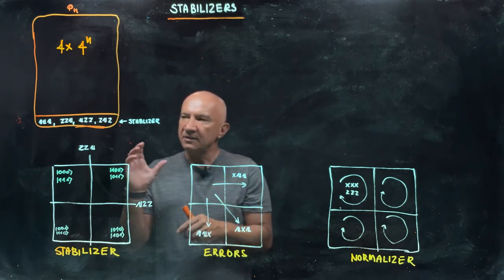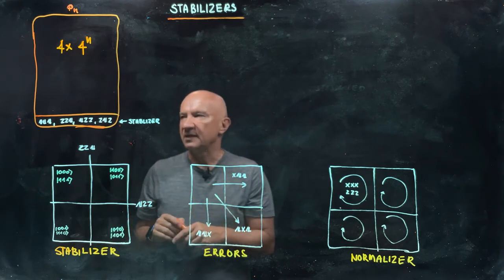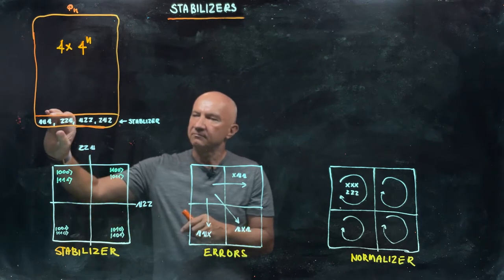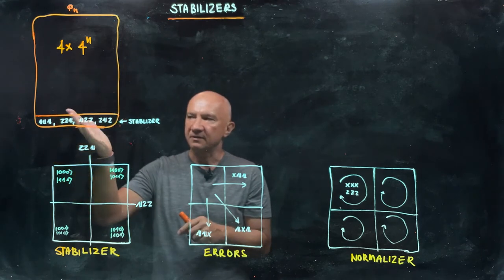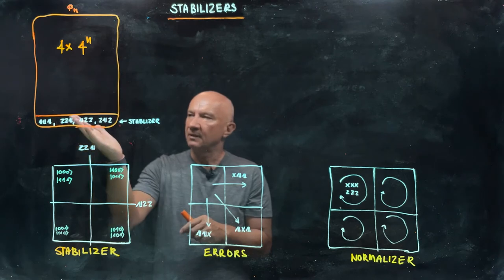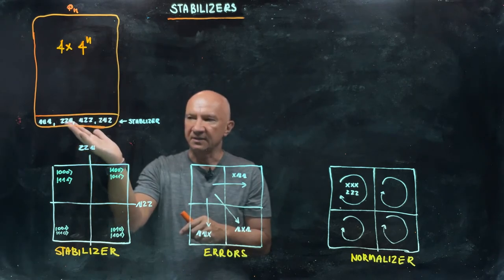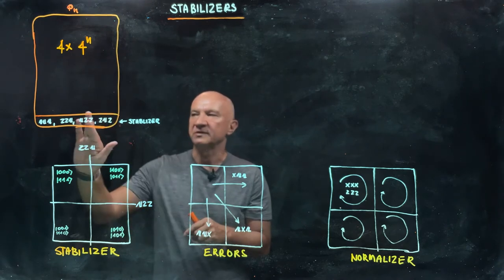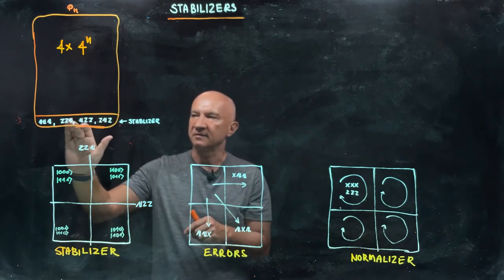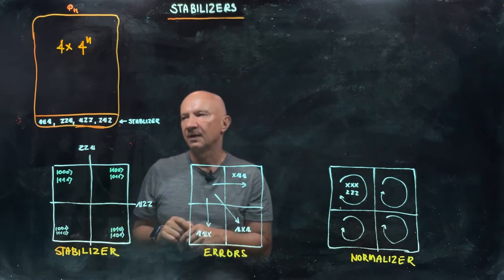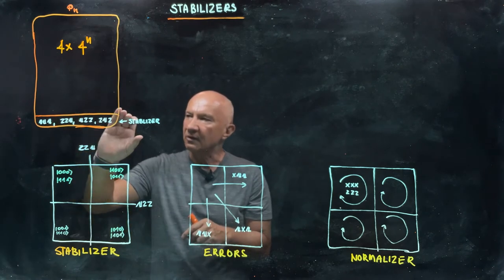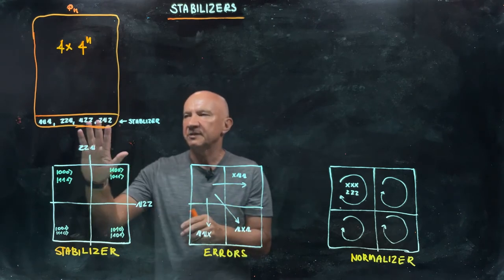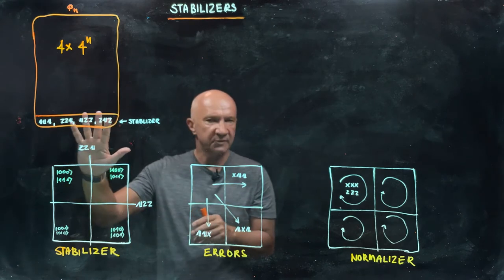To give a specific example of a stabilizer: the stabilizer will be an abelian group containing the identity operator, Z⊗Z⊗I, I⊗Z⊗Z, and Z⊗I⊗Z — meaning Z tensor Z tensor identity, and so on. The role of those operators — think about them as observables first of all.